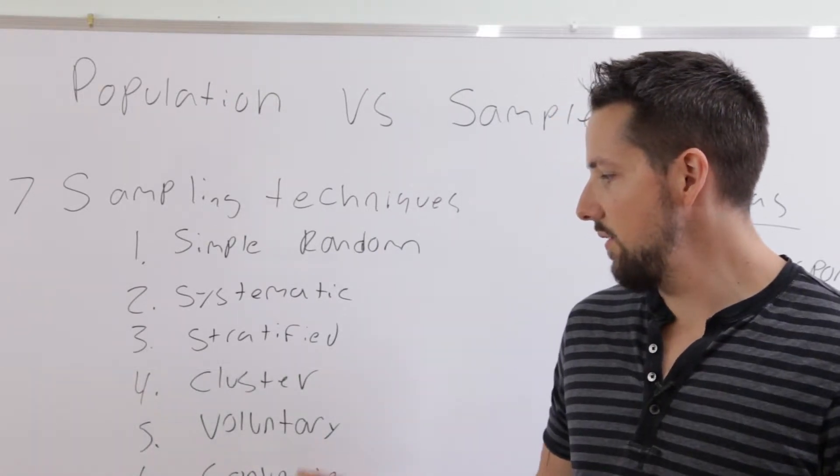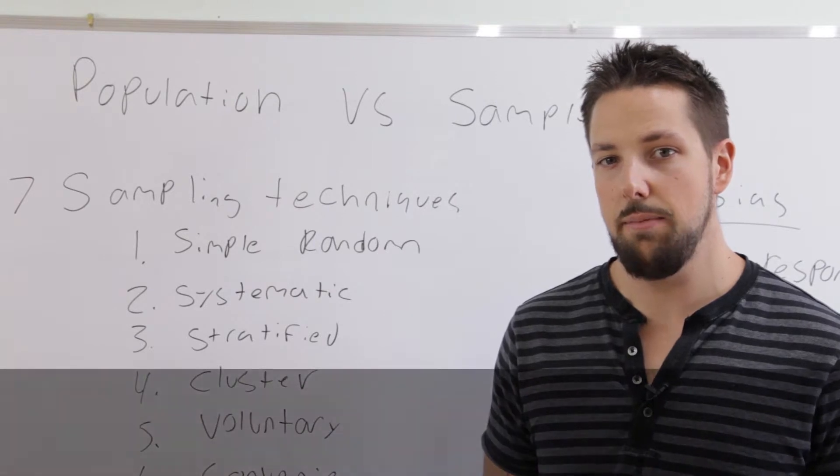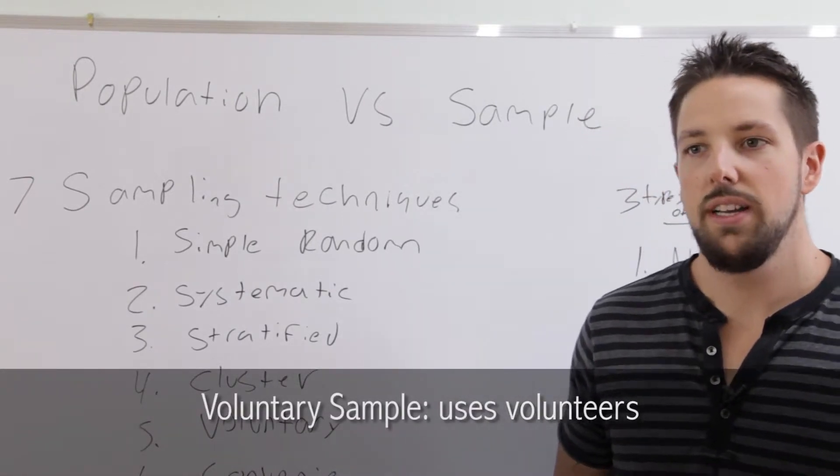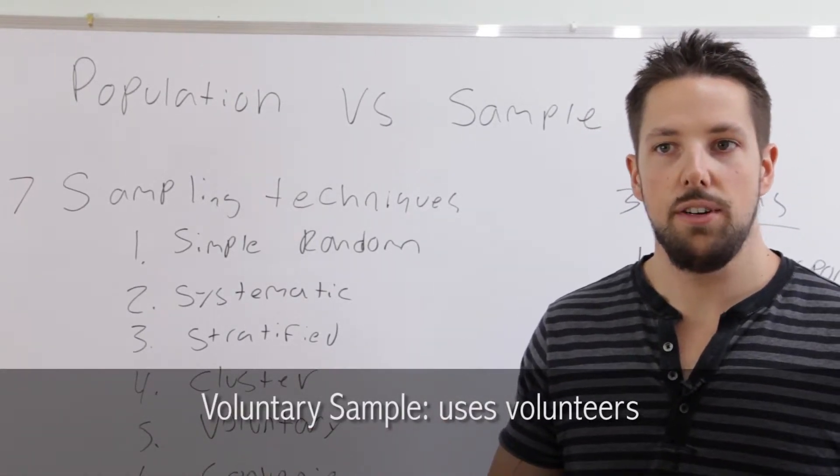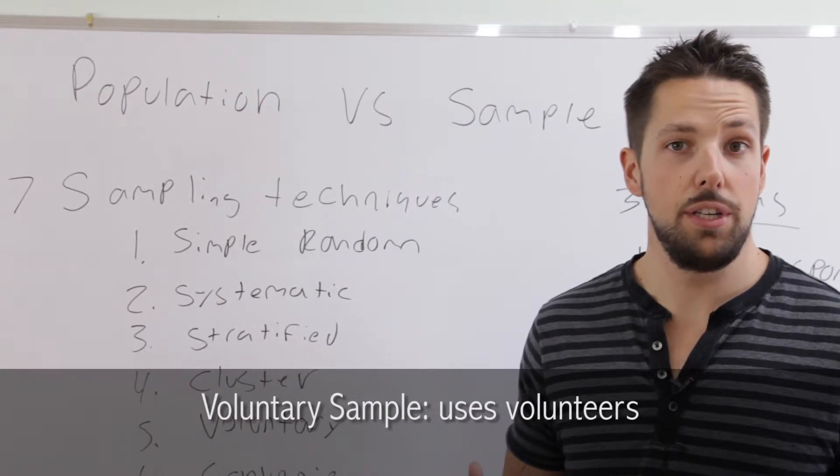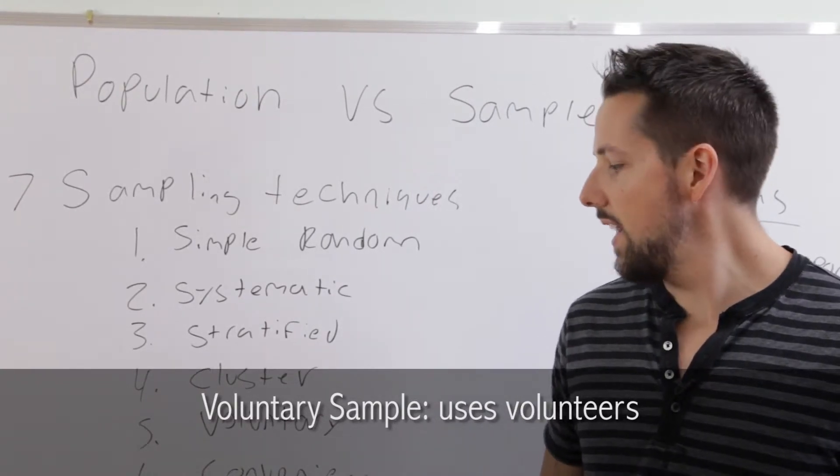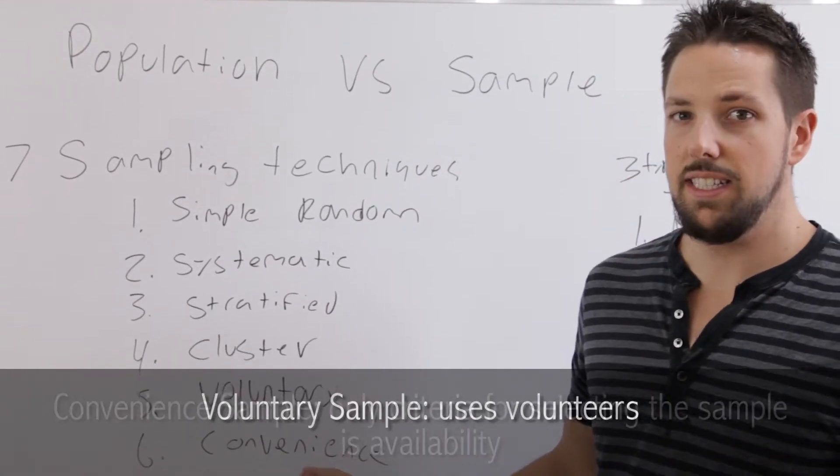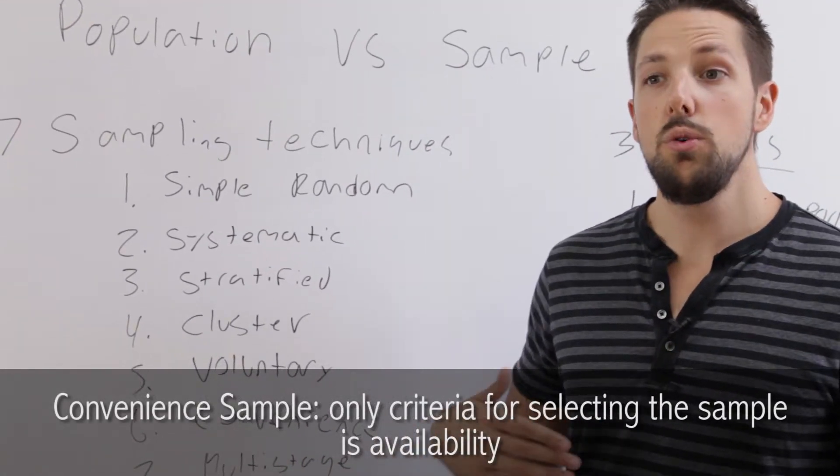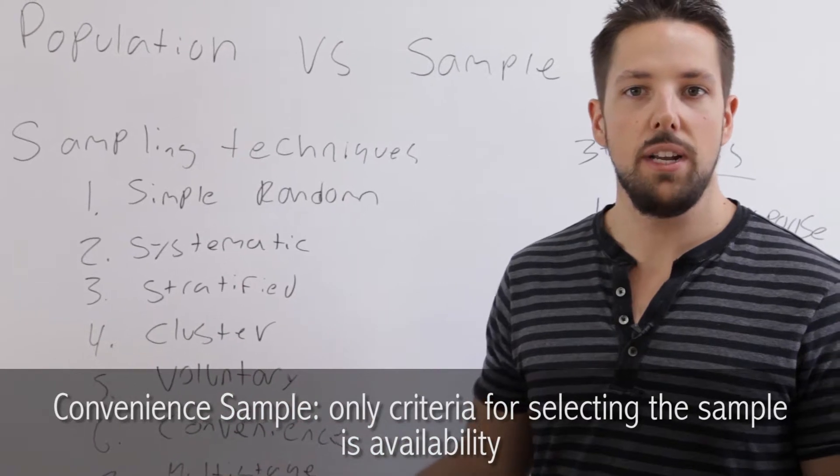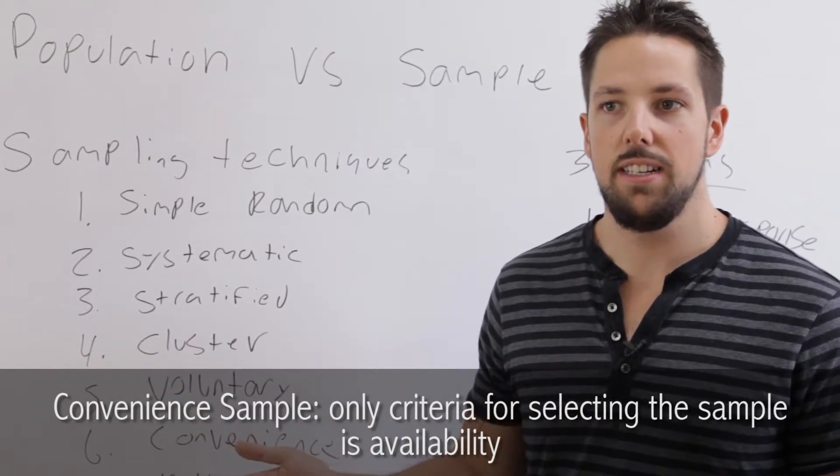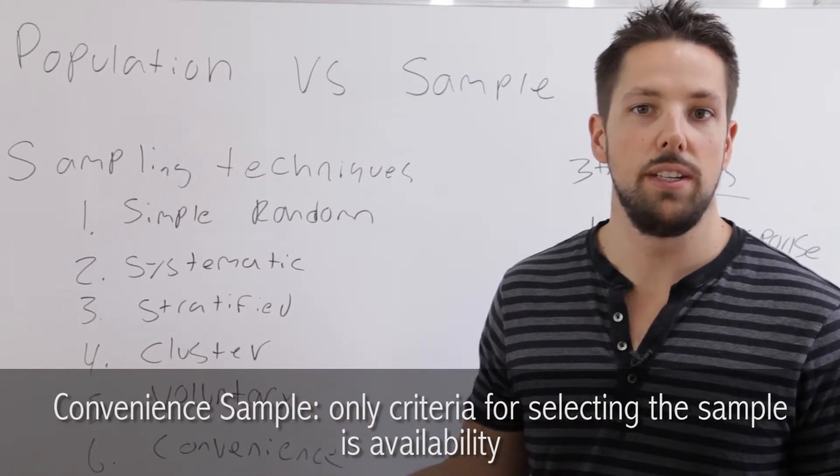The next type we have is called a voluntary response sample. With this one, you put out the offer to participate and whoever comes to you is in your study. The next one is similar, convenience sample. You seek out who you want. You pick your sample based solely on the criteria that they're available and are willing to perform.